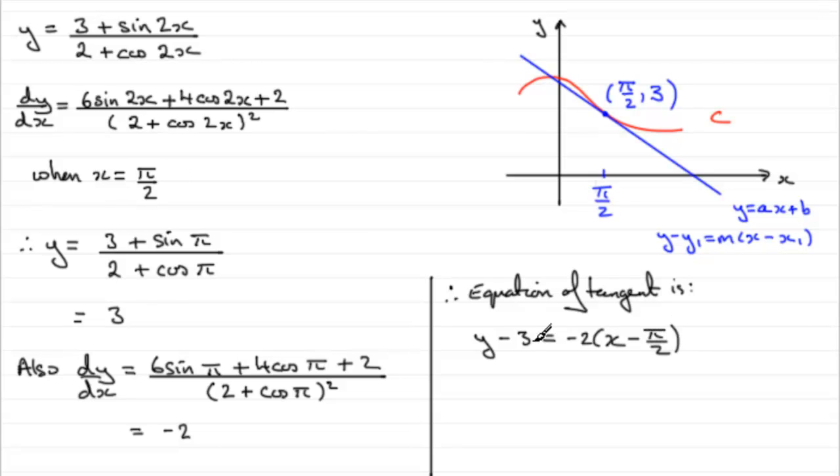Now, we've got to give it an exact form. So, we don't want to type in π, because that's going to give us a horrible decimal. Just add 3 to both sides and expand out the bracket. So, if we expand out the bracket, we've got -2x. And then, -2 times -π/2 is going to be plus, just simply π.